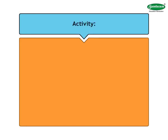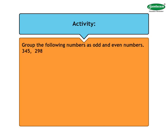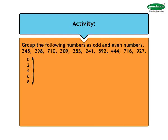Now it is time for an activity. Group the following numbers as odd and even numbers: 345, 298, 710, 309, 283, 241, 592, 444, 716, 927. We know that if the digit in the units place is 0, 2, 4, 6, or 8, then the number is an even number; and if the digit in the units place is 1, 3, 5, 7, or 9, then the number is an odd number.